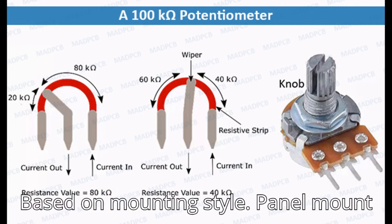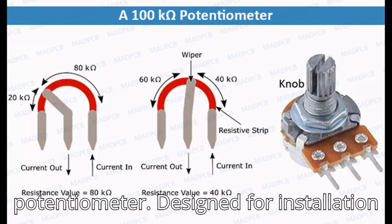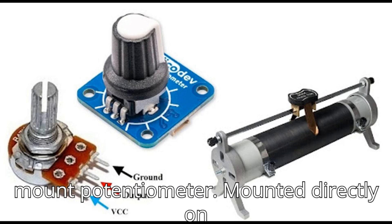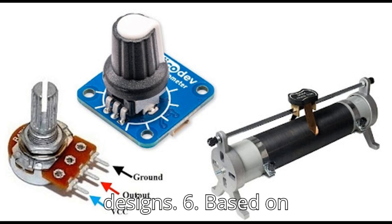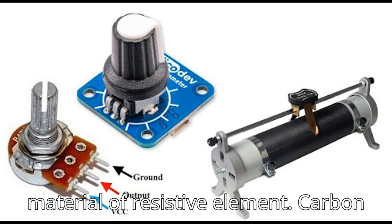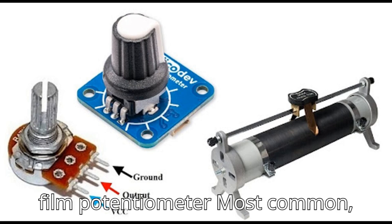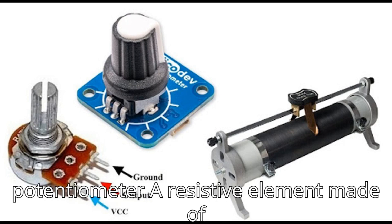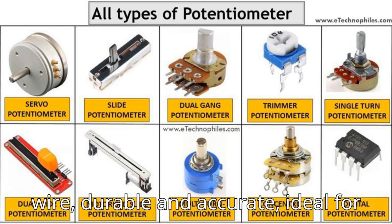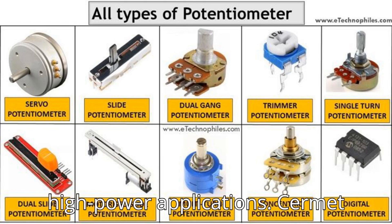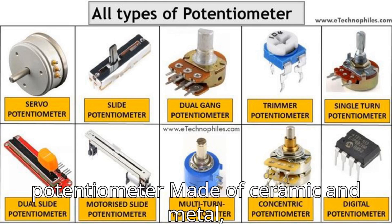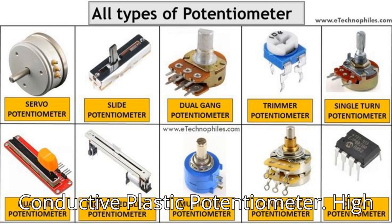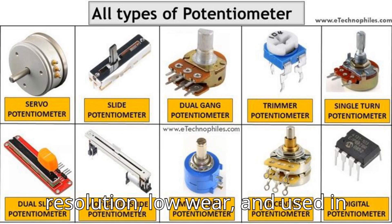Based on mounting style: the panel mount potentiometer is designed for installation on equipment panels, typically with a knob for manual adjustment. The PCB mount potentiometer is mounted directly on printed circuit boards for compact designs. Based on material of resistive element: carbon film potentiometers are the most common, economical, and suitable for general-purpose applications. Wire wound potentiometers are durable and accurate, ideal for high-power applications. Cermet potentiometers, made of ceramic and metal, provide better stability and precision. Conductive plastic potentiometers offer high resolution, low wear, and are used in precision sensing.